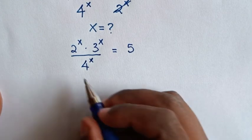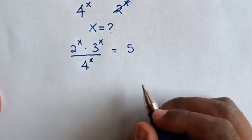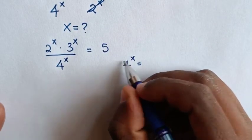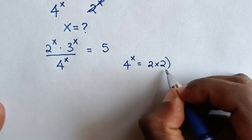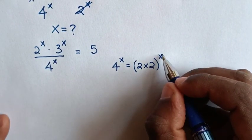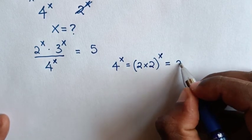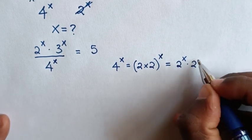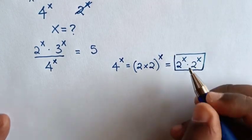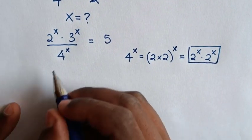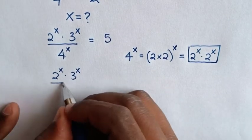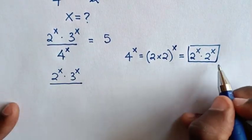Then for this 4 power x, we rewrite it: 4 power x is equal to (2 times 2) bracket power x. So this equals 2 power x times 2 power x. We substitute this value of 2 power x times 2 power x in place of 4 power x in our equation.